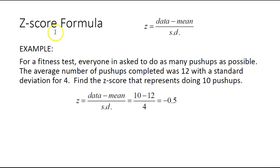So how do you find a z-score? You need to figure out how far your data is from the mean—data minus mean—and then figure out how many standard deviations that is. So data minus mean divided by standard deviation gives you the z-score.